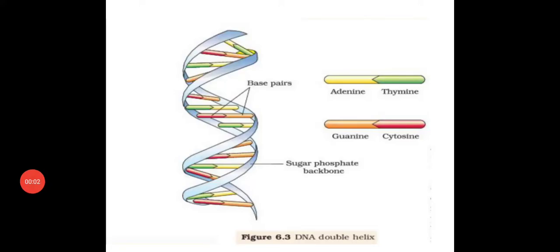Welcome students. In our last lecture we were studying about the structure of DNA, specifically the double helix model proposed by Watson and Crick. We studied that there are two complete polynucleotides in anti-parallel position — if one chain runs from five prime to three prime end, the other runs from three prime to five prime end.